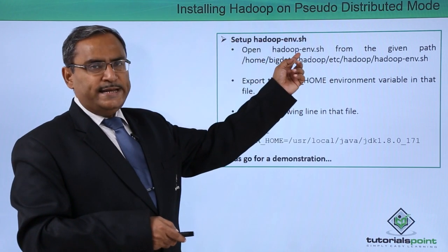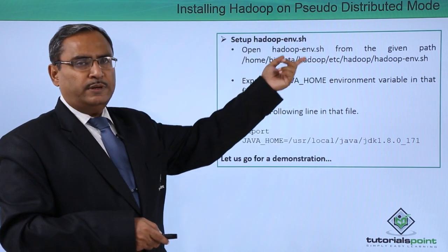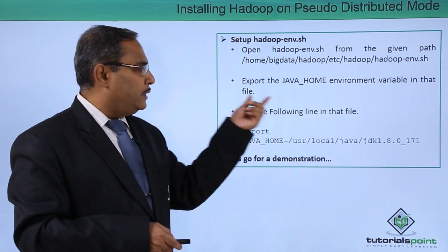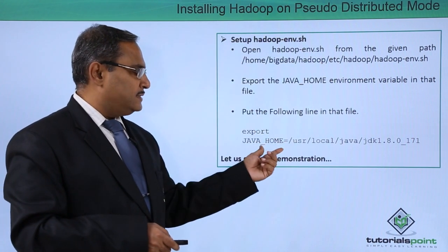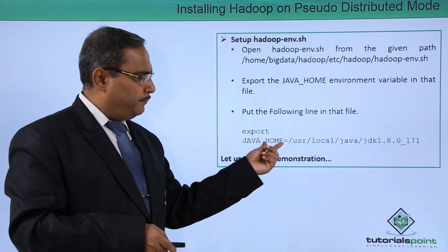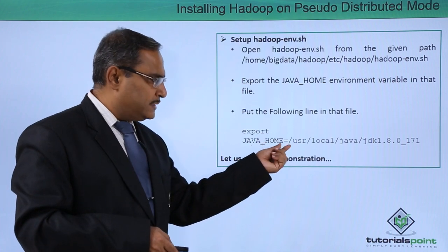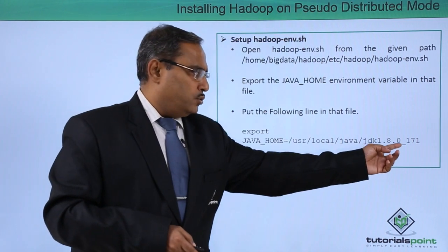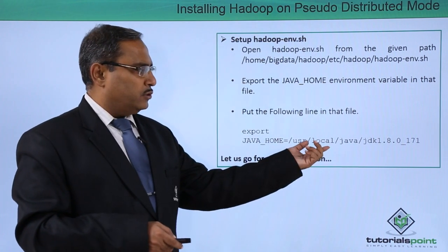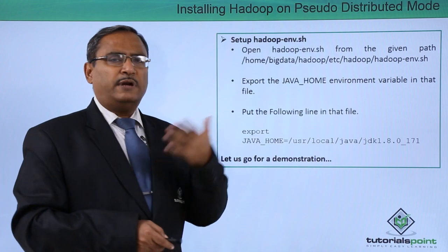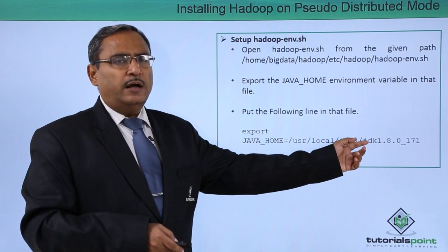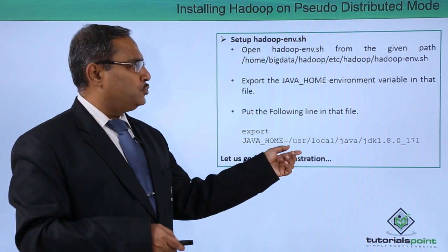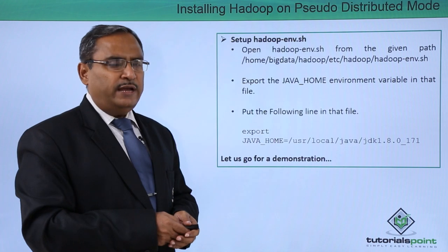Open the hadoop-env.sh from the given path — this is the shell program — and export the JAVA_HOME environment variable in that file. Put the following line: export JAVA_HOME=/usr/local/java/jdk1.8.0_171. Check your own path; in my system the path was like this, but if you have a different version of Java, the export string will also change accordingly. This line has to be put in the hadoop-env.sh file.